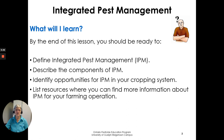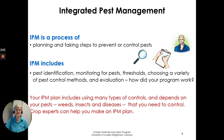IPM is a process of planning and taking steps to prevent and control pests. IPM includes identification, monitoring, thresholds, pest control methods, and evaluation — you want to know how that program worked. Your IPM program includes many types of controls, not only pesticides, and depends on your pests that are present, which could be weeds, insects, and/or diseases. Crop experts can help you make an IPM plan.